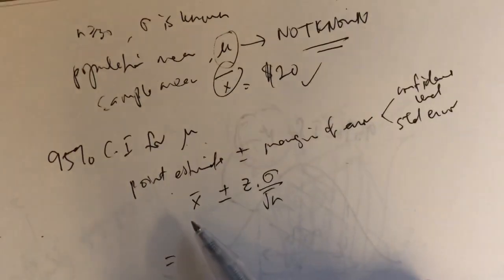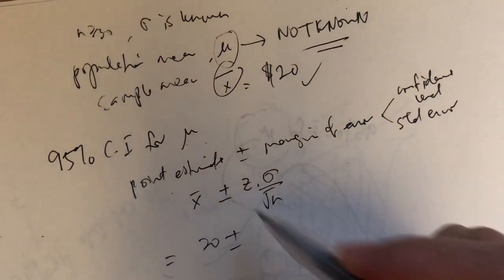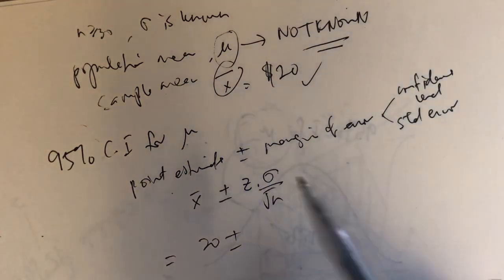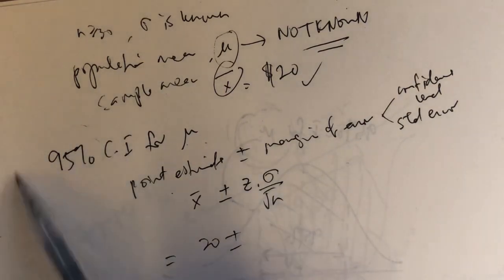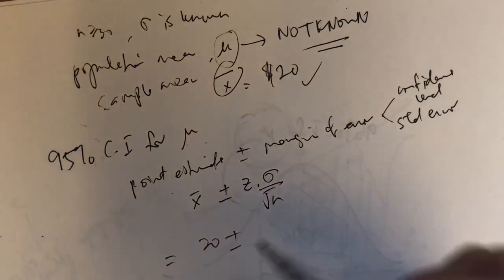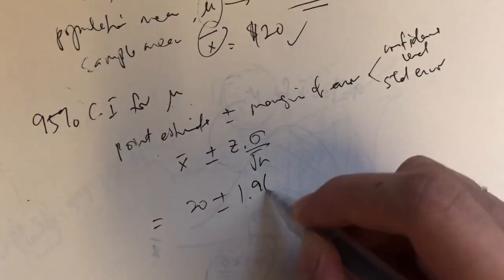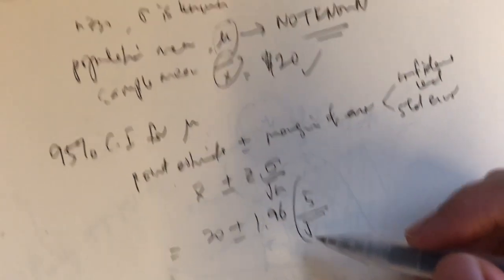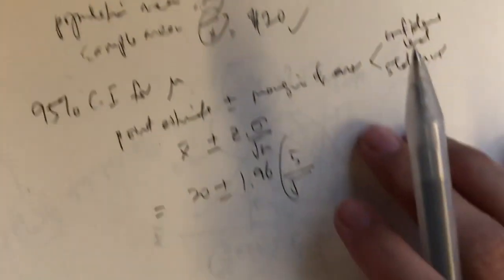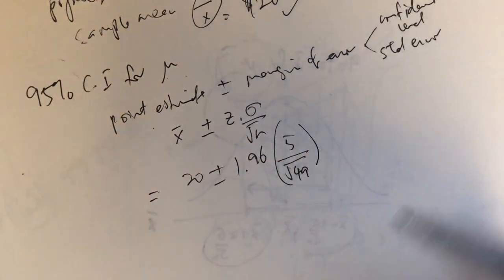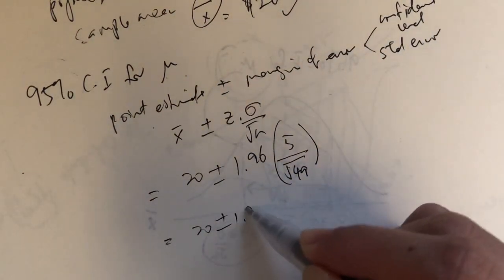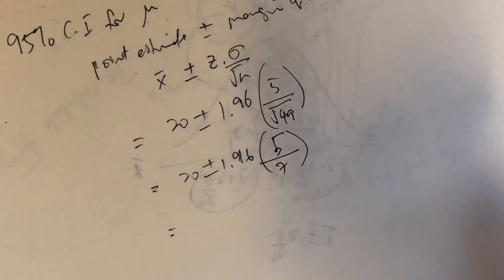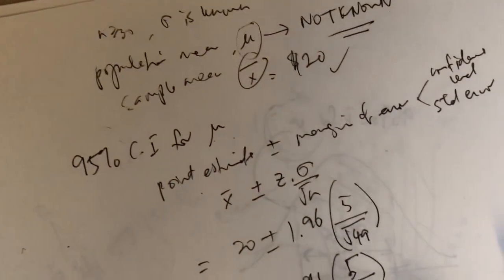So in this question, our x̄ is 20. It's 20 plus or minus z. Now remember, for 95% confidence, if you've memorized it, the z value is 1.96. Please know how to find the z value from a given probability. So for 95%, z is 1.96. The sigma is $5 from this question, over the square root of the sample size, which is 49. So we calculate: 20 plus or minus 1.96 times 5 over 7, which gives 20 plus or minus 1.96 times 0.7143.